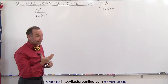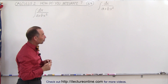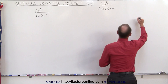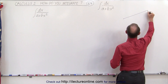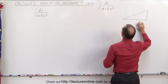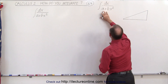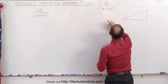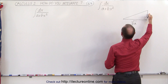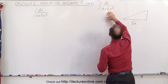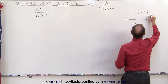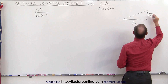It turns out that trig substitution works quite well here. So let's draw a triangle. The bottom side we're going to call the square root of a. The vertical side we're going to call the square root of bx squared, which makes it the square root of b times x.